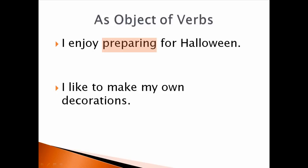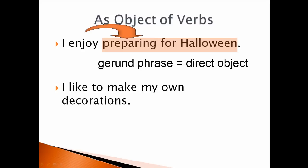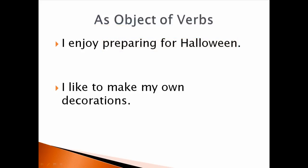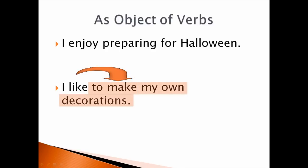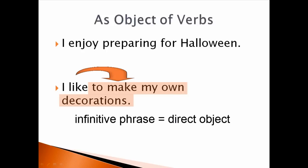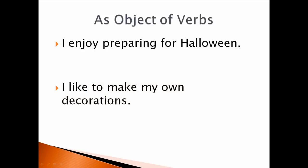But they can also appear in a larger phrase. In our first sentence we don't simply have 'preparing' but 'preparing for Halloween,' so the object of the verb is not just a gerund but a gerund phrase. In our second sentence the object of 'like' is not simply 'to make' but 'to make my own decorations' — an infinitive phrase. So the object of a verb can be a gerund, a gerund phrase, an infinitive, or an infinitive phrase.